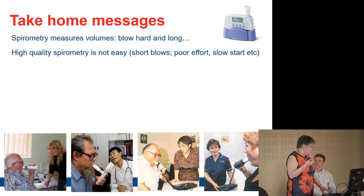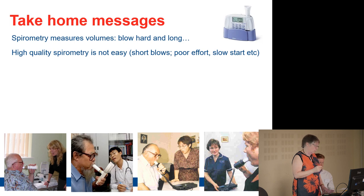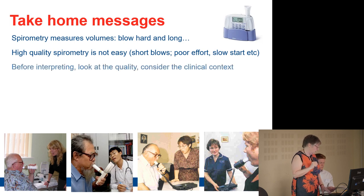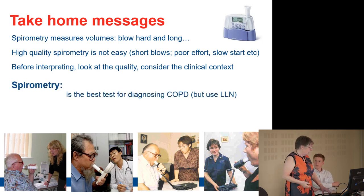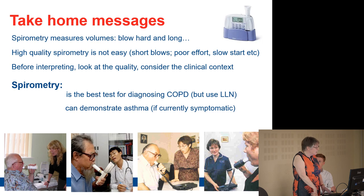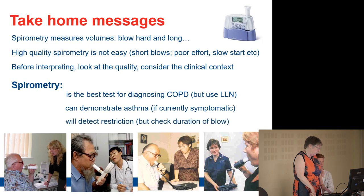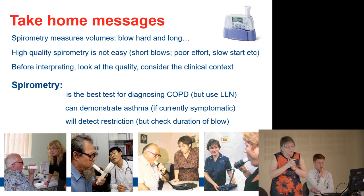Spirometry is measuring volume, so you really need a long hard blow. High-quality spirometry is not easy — check every single blow for these potential problems. Before you interpret, look at the quality and think about the clinical context. Nobody should be interpreting a piece of paper. Spirometry is the best test for diagnosing COPD, but always use the lower limit of normal. It can demonstrate asthma, but only if the patient is symptomatic at the time and has abnormal baseline spirometry. It can detect restriction, but check the duration of the blow — an awful lot of apparent restriction is actually due to a short blow.